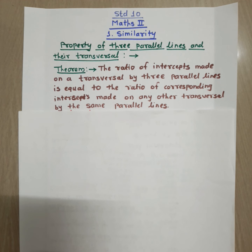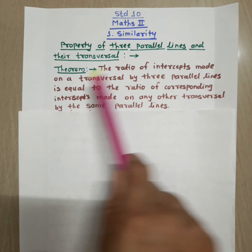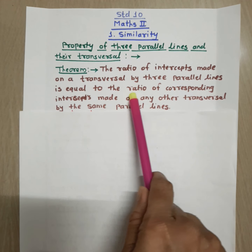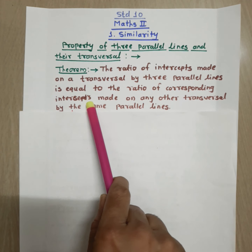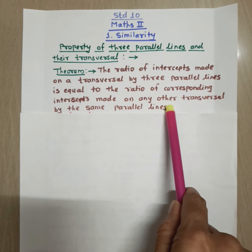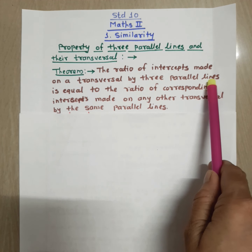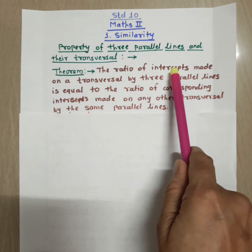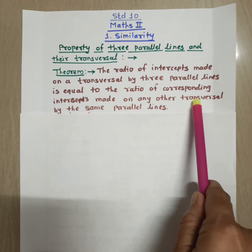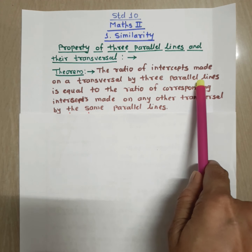The theorem for this property states that the ratio of intercepts made on a transversal by 3 parallel lines is equal to the ratio of corresponding intercepts made on any other transversal by the same parallel lines. To prove this theorem we require 3 parallel lines and 2 transversals.